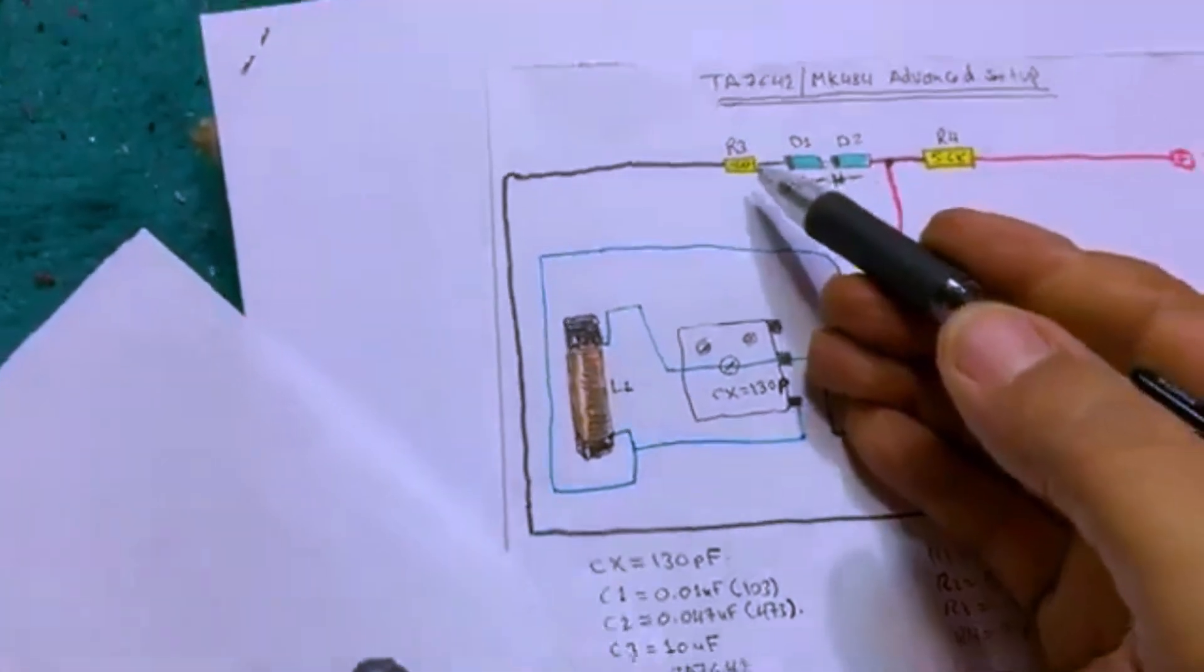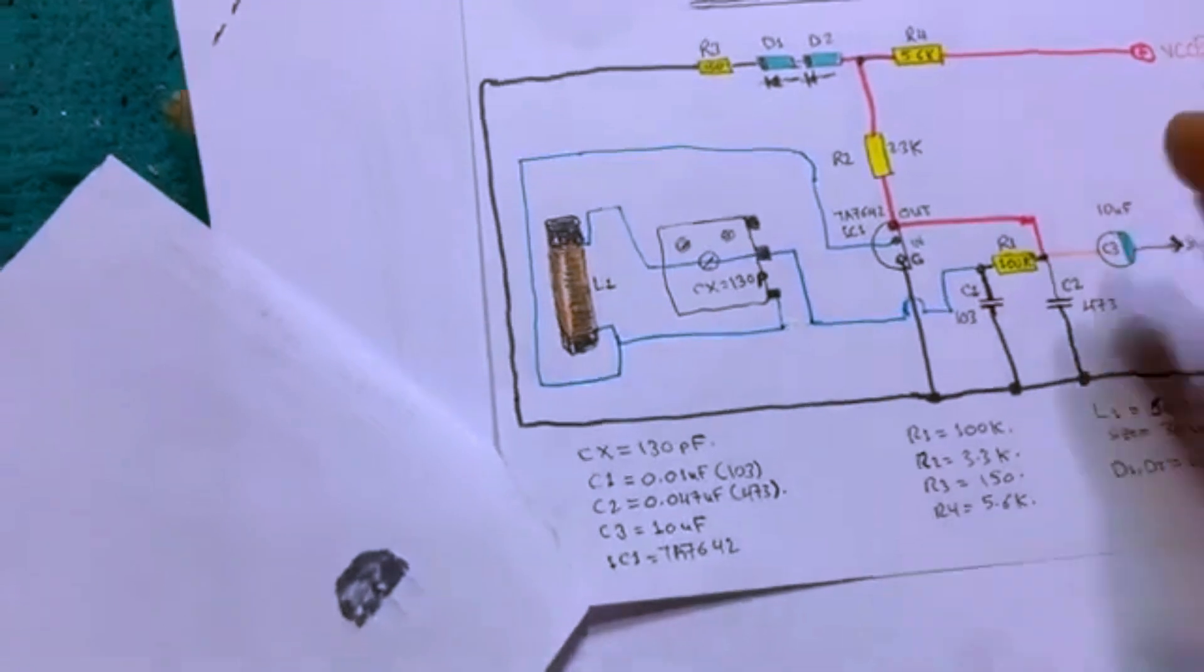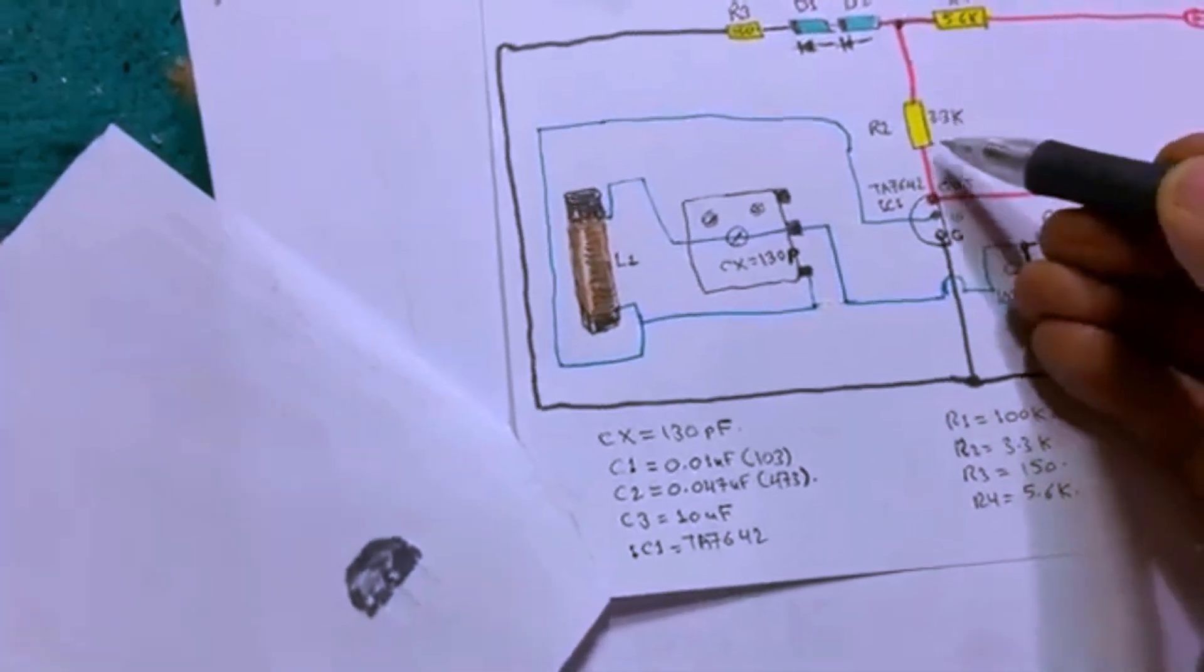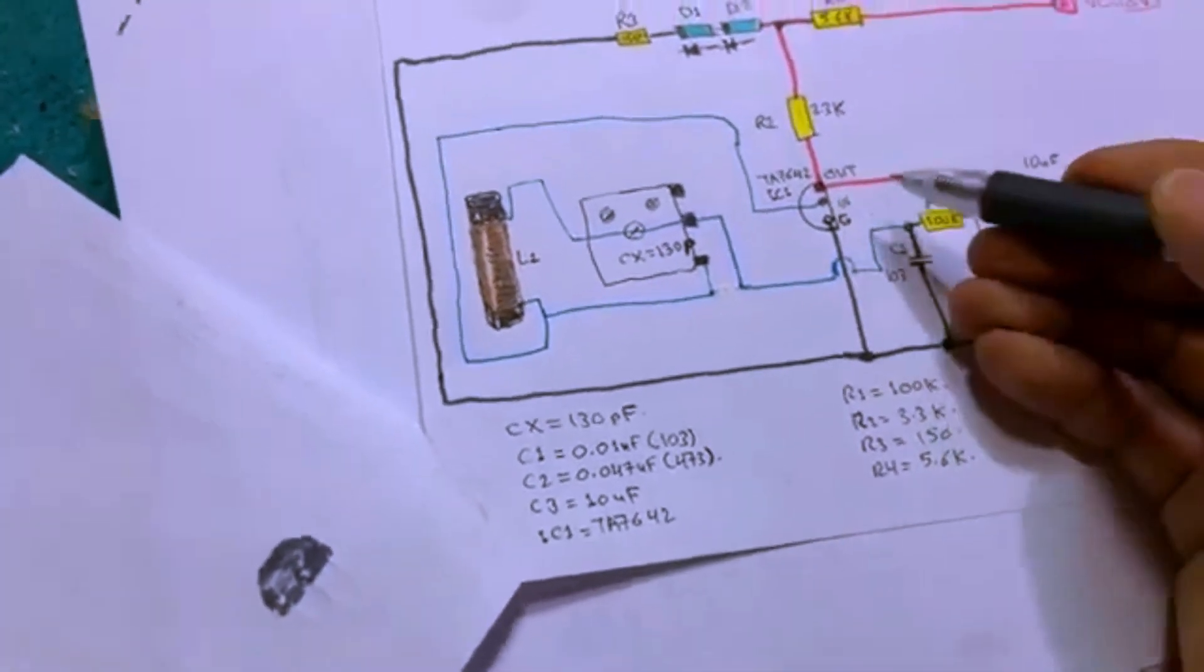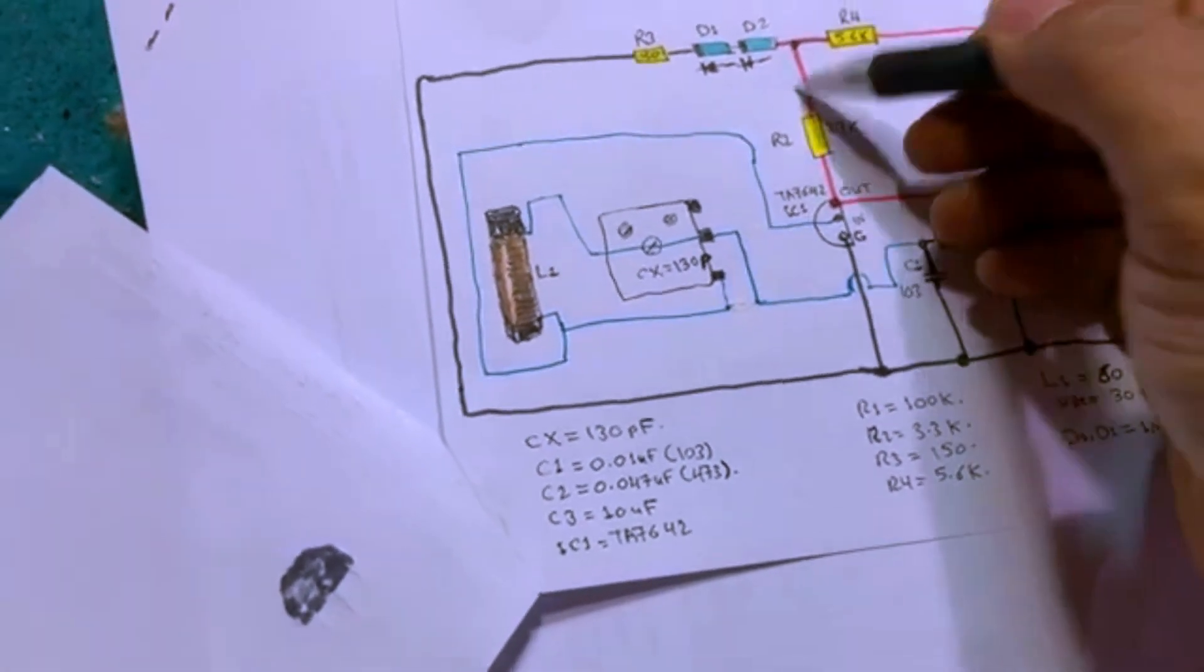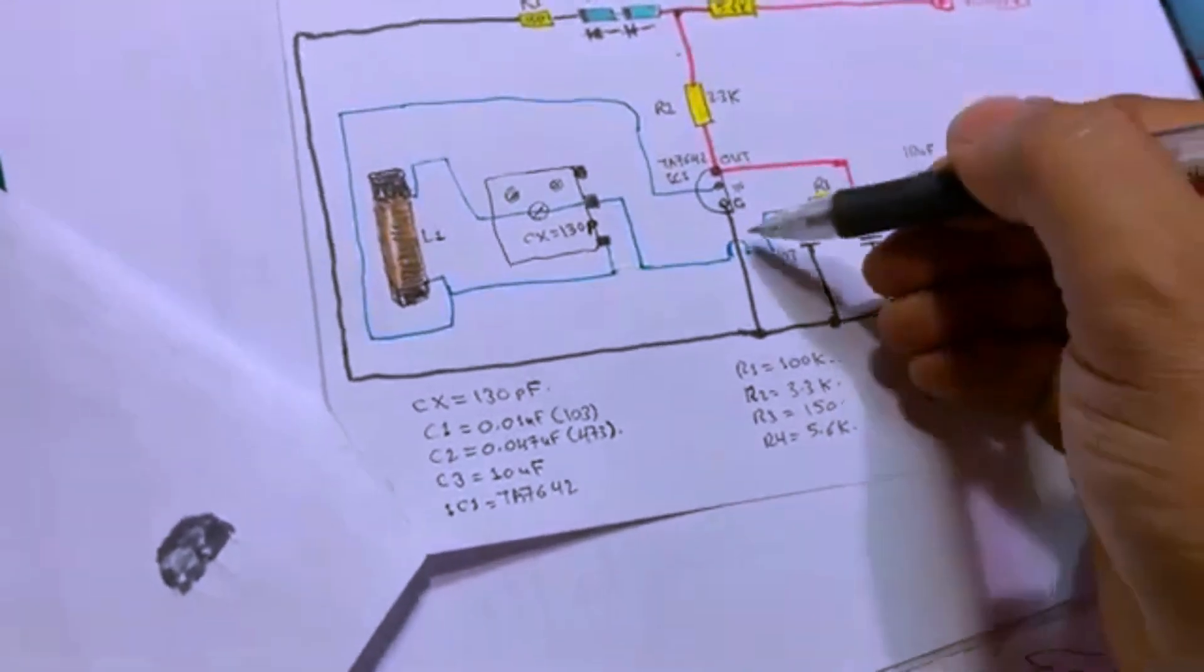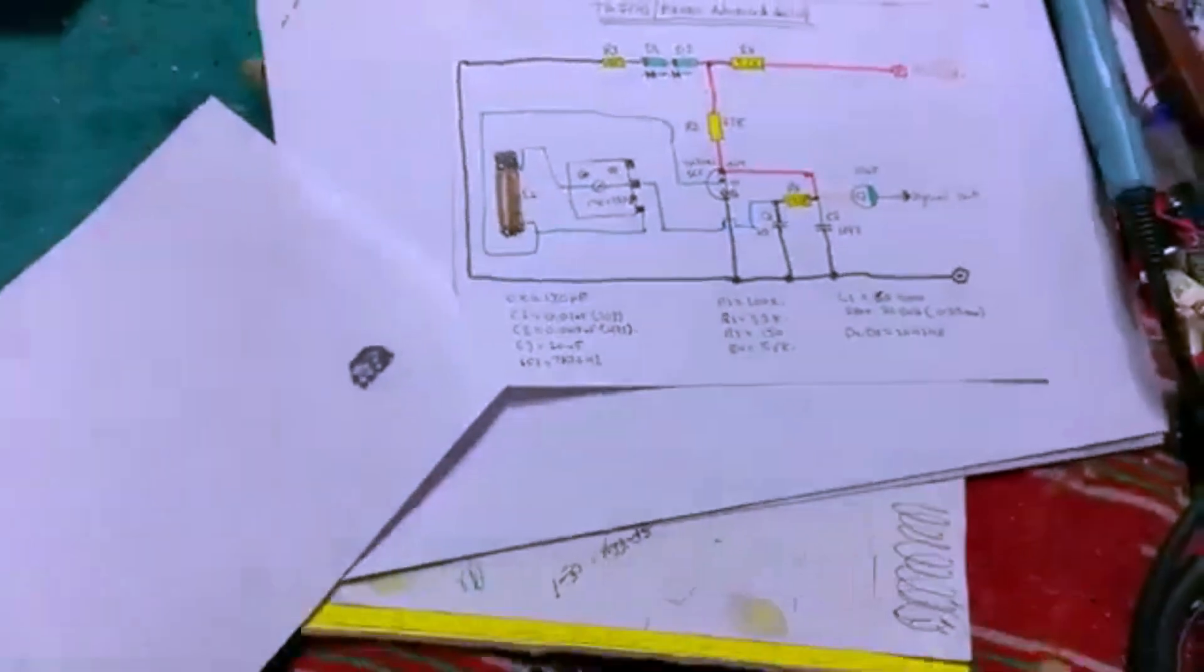With 150 ohm R3 and 5.6 kilo ohms with the connection of the TA7642, this will make sure that from here to here if you measure it you will get 1.8 volts, 1.7 to 1.8.